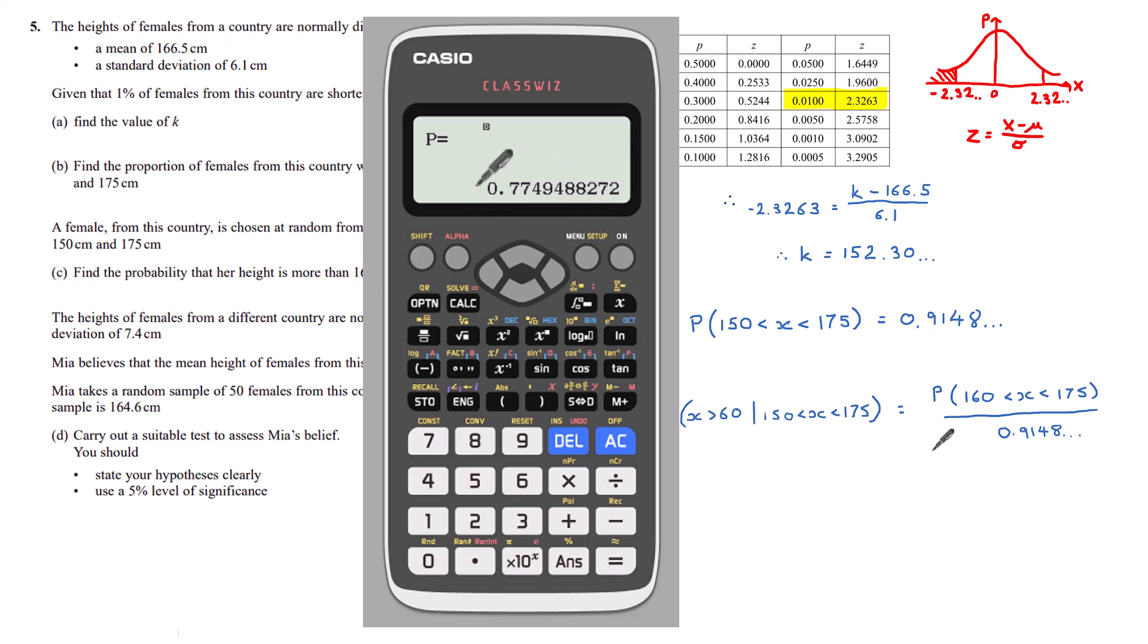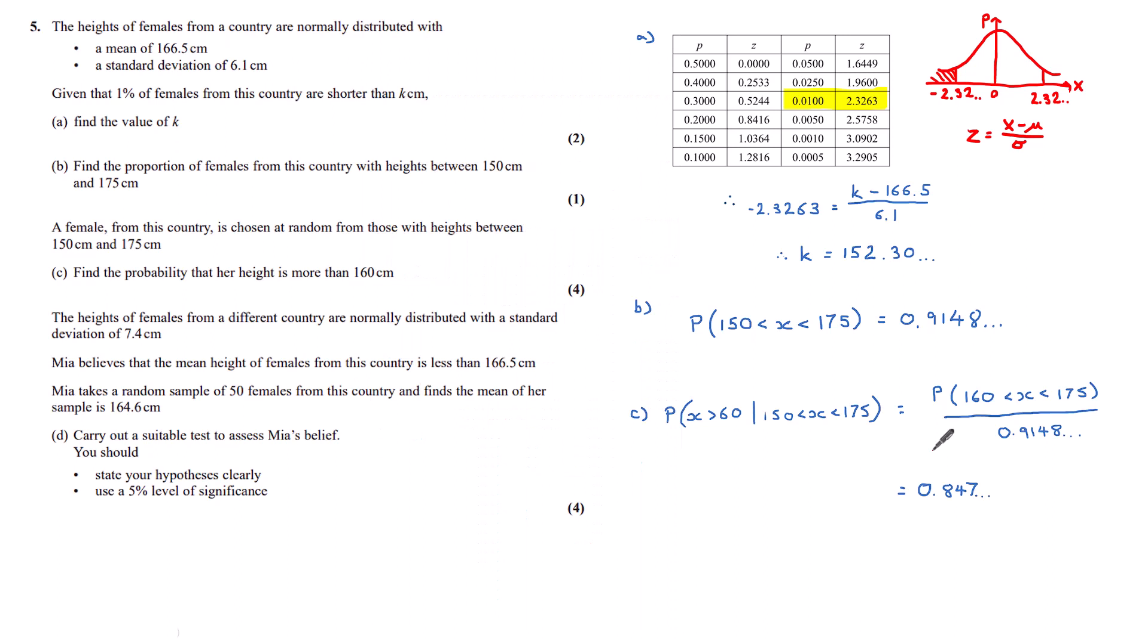We can now divide by our stored answer of A. So if we go to menu 1, our answer that we previously found, the 0.7 and so on, is stored as answer. And I can divide that by, if I go alpha A, divide by the A that was stored, and I get an answer of 0.847 and so on.